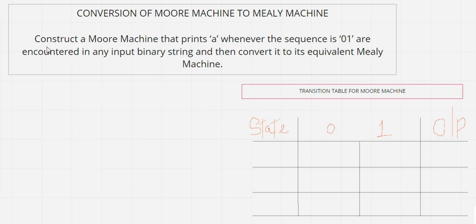The example says: first we have to construct a Moore machine that prints 'a' whenever the sequence zero-one is encountered in any input binary string, and then convert it to its equivalent Mealy machine. So first we have to construct the Moore machine.